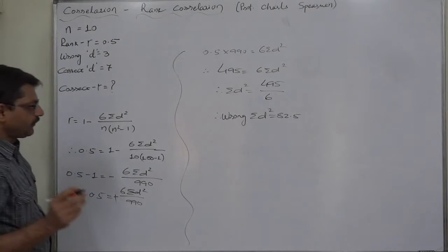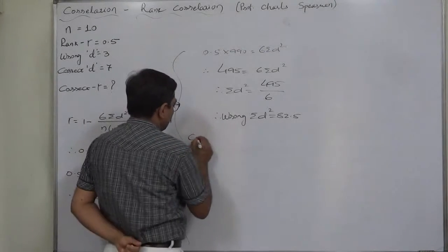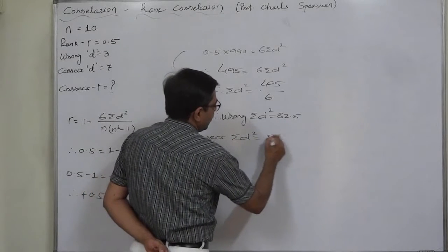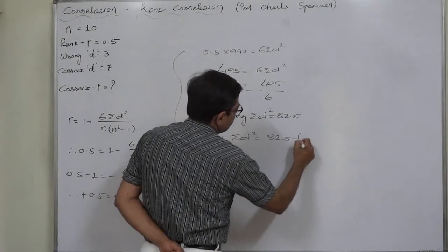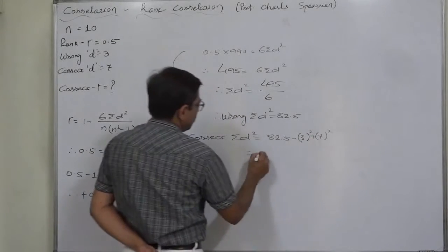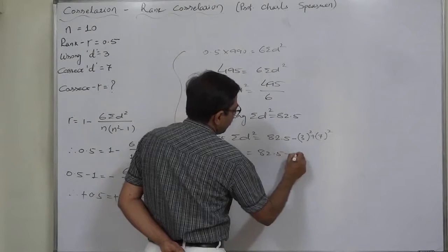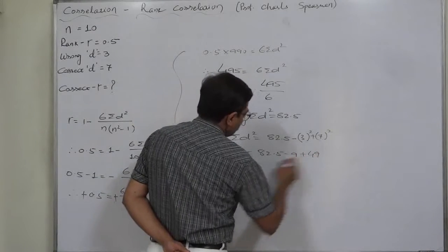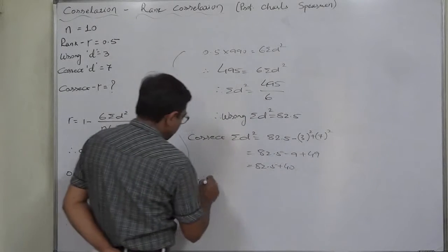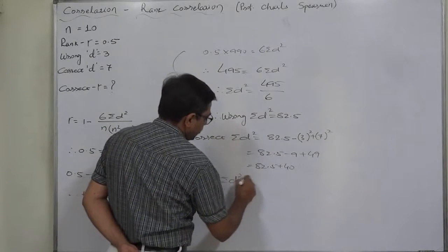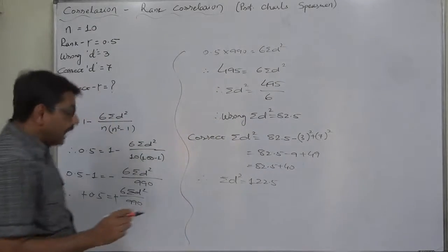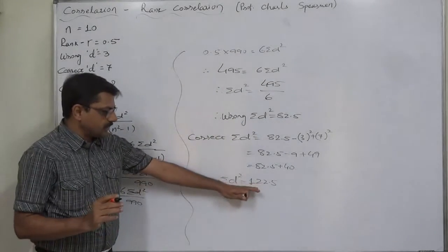Now we remove the effect of the wrong value of d and add the correct value. The correct sigma d² = 82.5 − 3² + 7² = 82.5 − 9 + 49 = 82.5 + 40. So the correct value of sigma d² = 122.5.